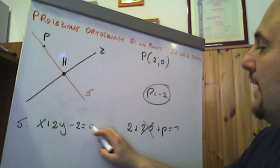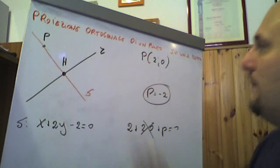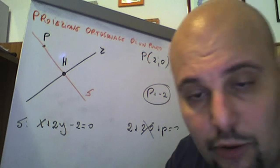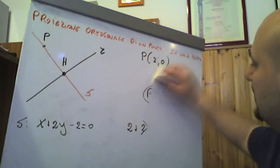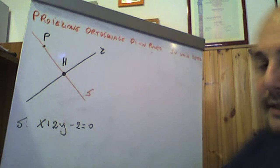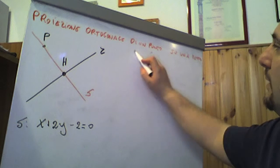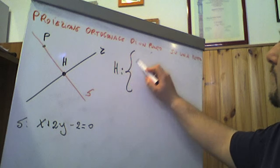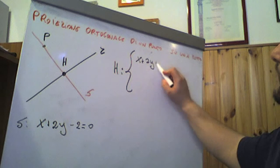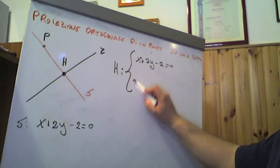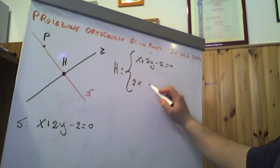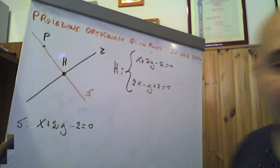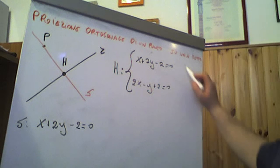Questa è la retta S, che è certamente perpendicolare ad R e passante per il punto P. Per calcolare la proiezione ortogonale del punto P sulla retta R, basta fare un sistema tra la retta R e la retta S: x + 2y - 2 = 0 e 2x - y + 2 = 0.